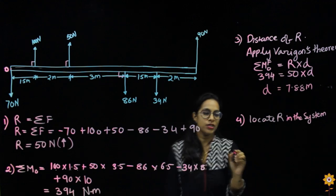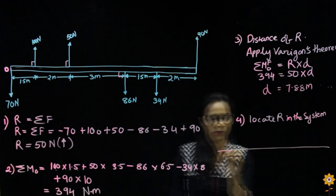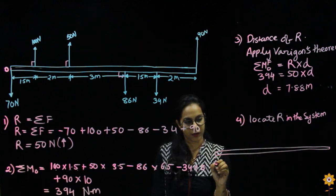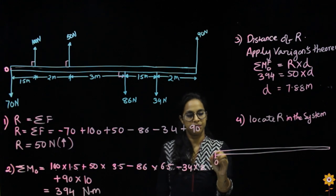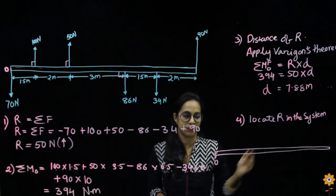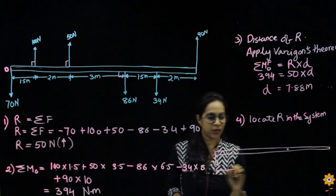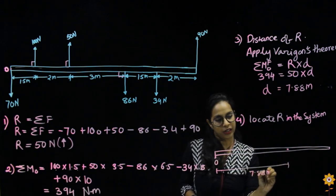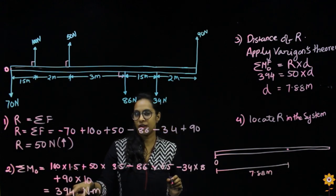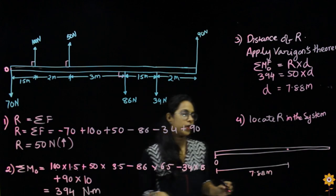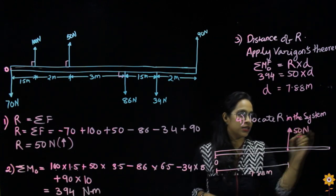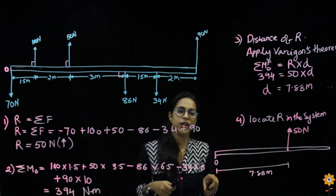To locate the resultant, we draw a representation of the given beam with point O. Our resultant is 50 Newton at a distance of 7.88 meters from O. Since the moment value is positive — meaning anticlockwise — the 50 Newton resultant force acts upward at 7.88 meters from O in the anticlockwise sense.